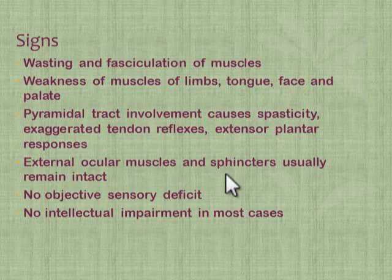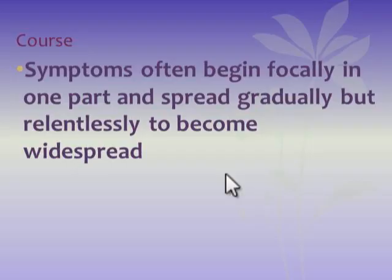Clinical signs of motor neuron disease include wasting and fasciculation of muscles — signs of lower motor neuron lesion — and weakness and paralysis of the limbs, tongue, face, and palate. Pyramidal tract involvement causes spasticity and exaggerated tendon reflexes and extensor plantar response, indicating upper motor neuron signs. There is no abnormality in ocular muscles or sphincter muscles, no problem with sensory nerves, and intellectual functions are absolutely normal. The disease begins focally and spreads gradually.